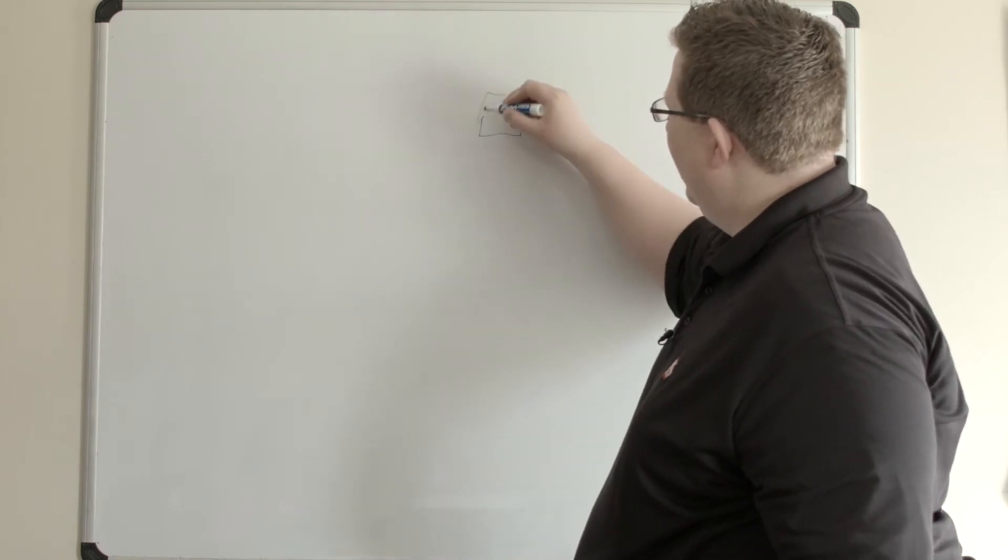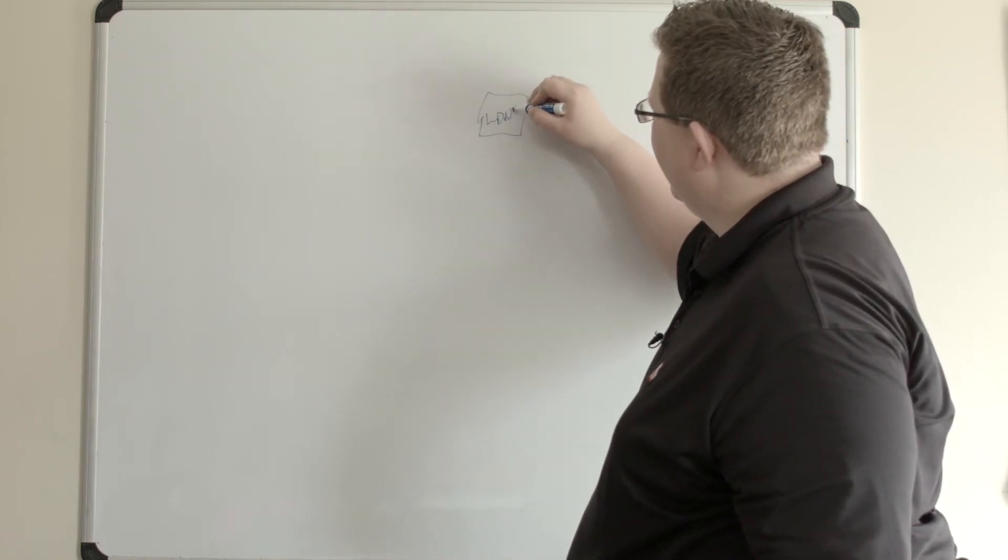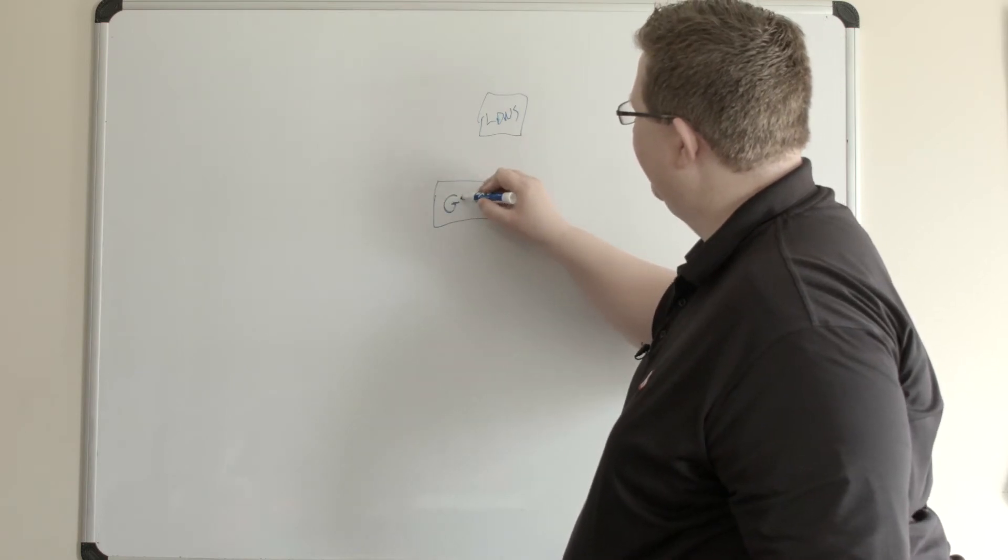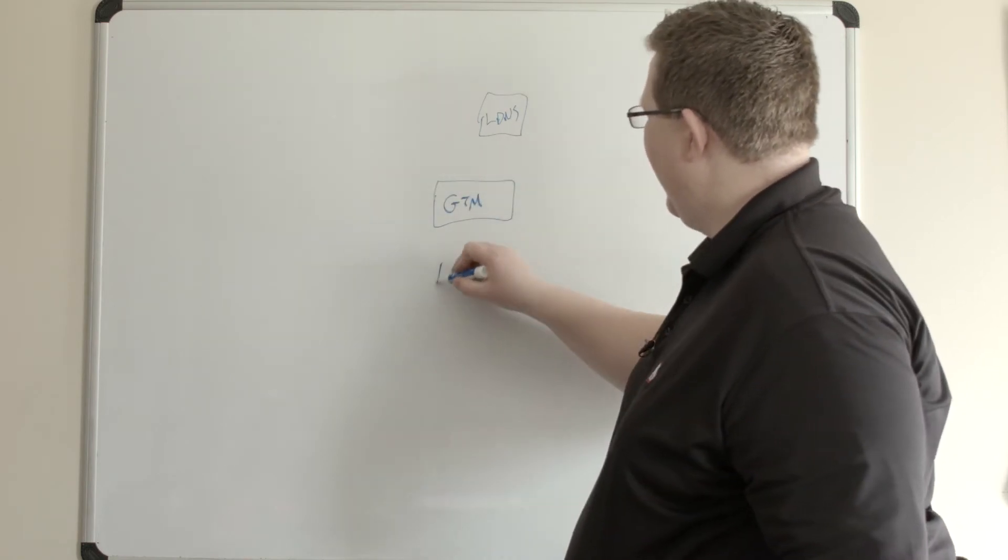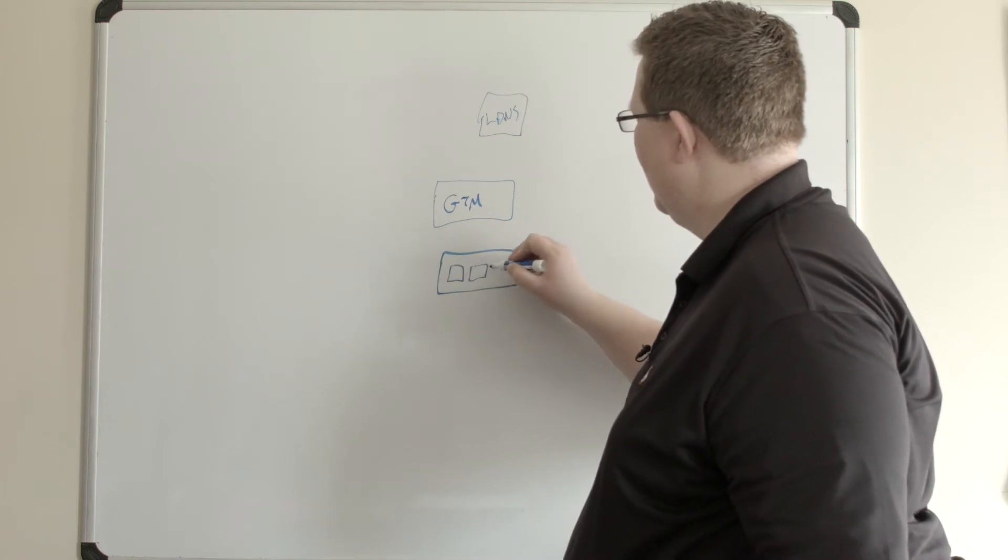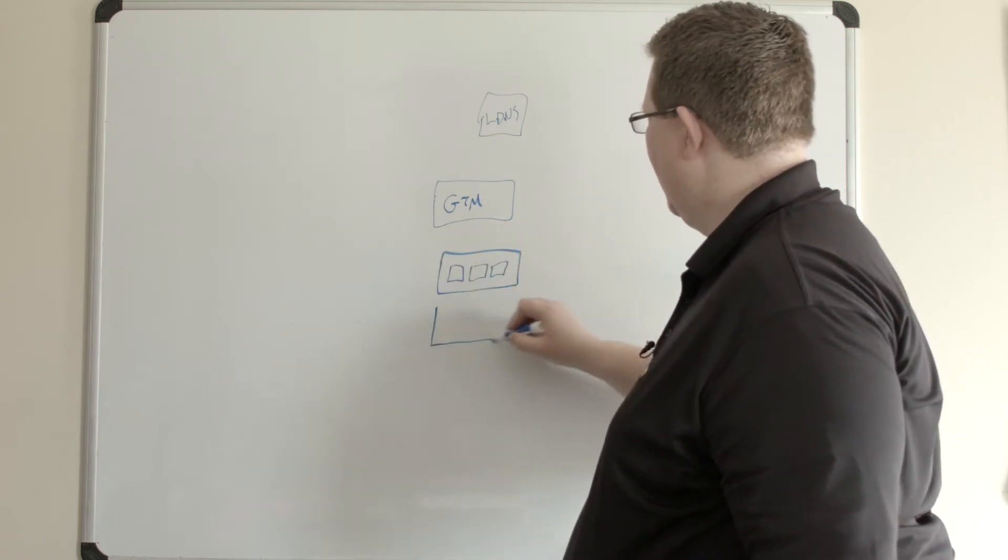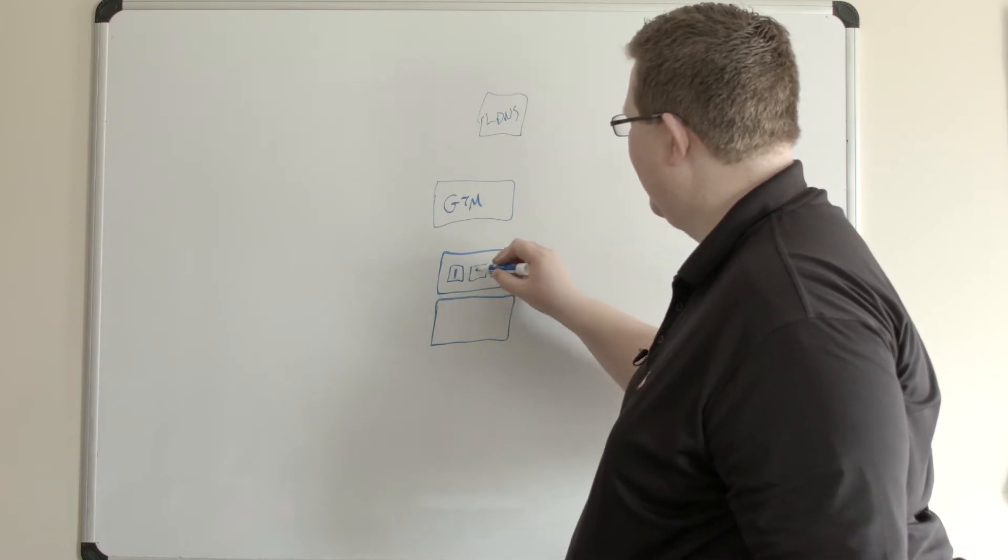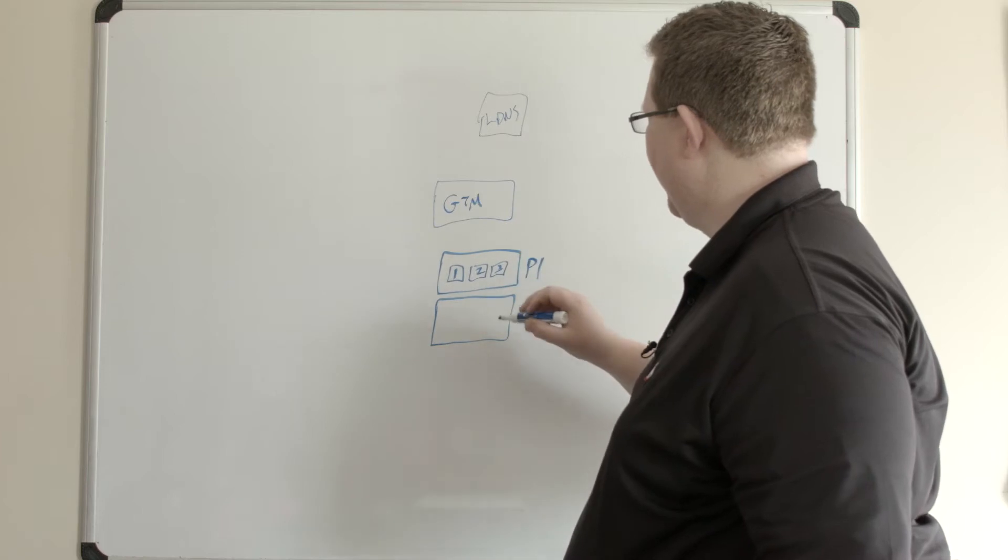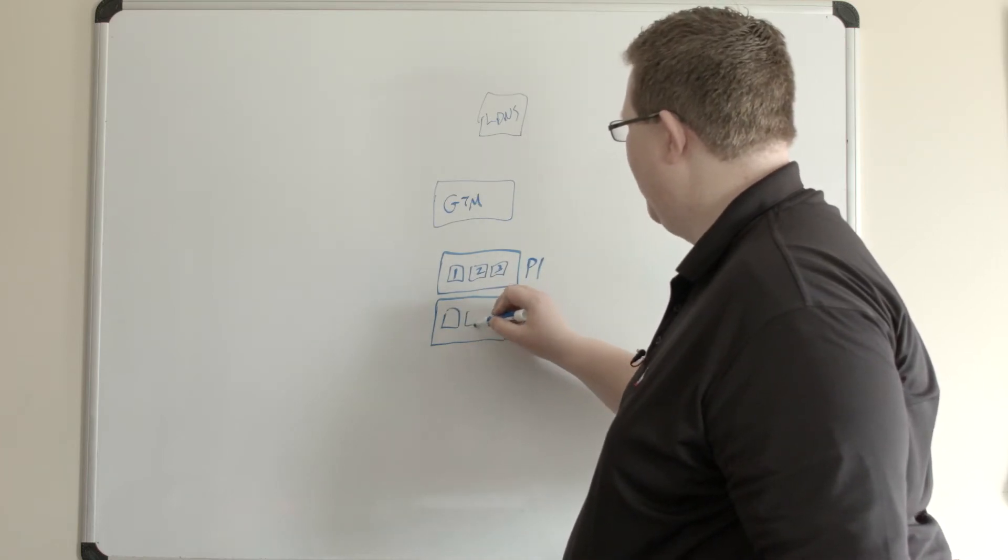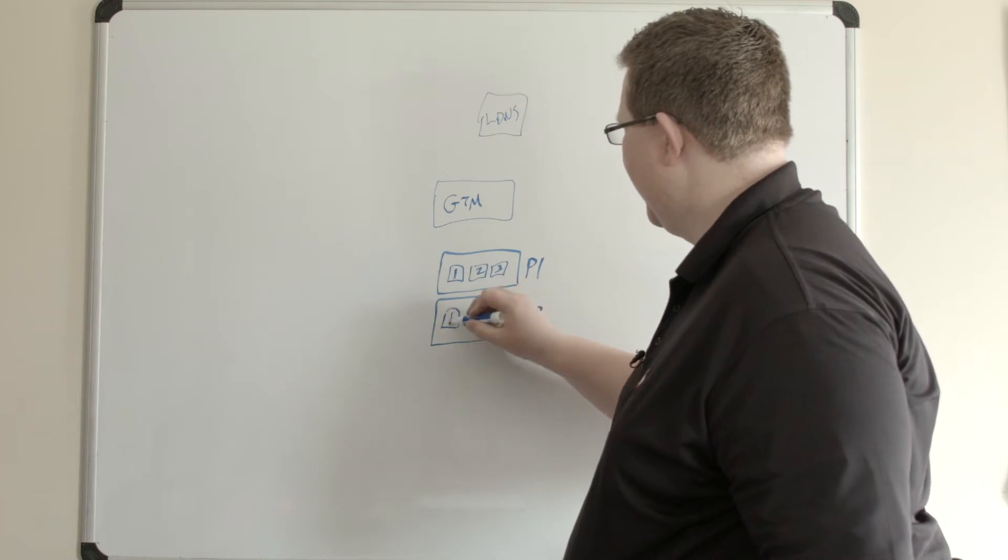How return to DNS works is you have your LDNS server out here and you have your GTM, and then you have your pools with servers in them. We'll have this be P1 with virtual servers one, two, and three in that pool, and you have pool two with servers one, two, and three in there.